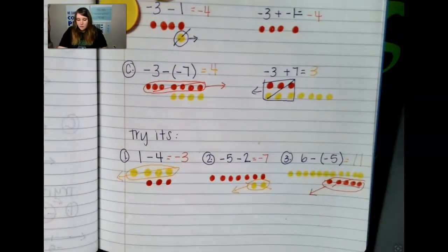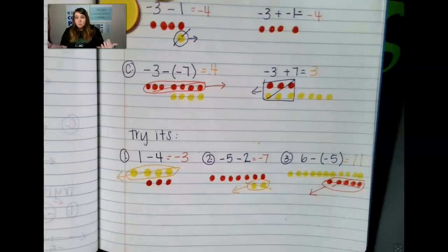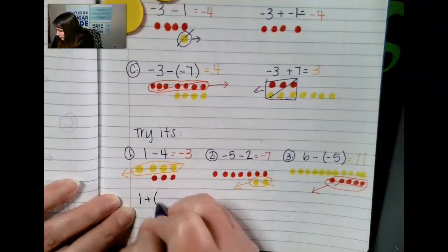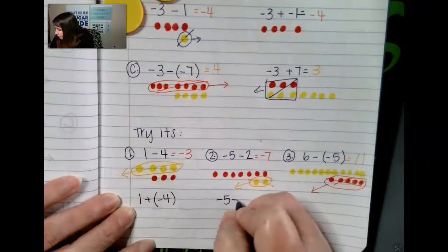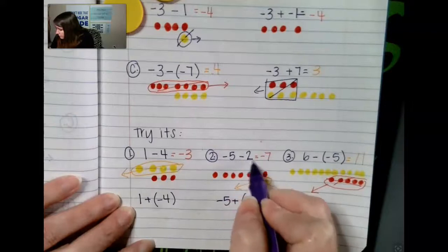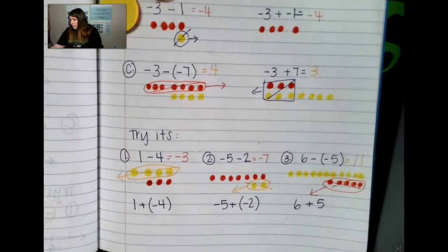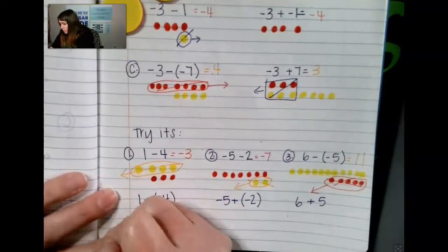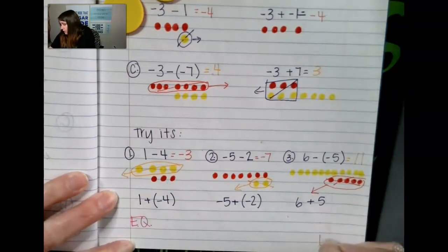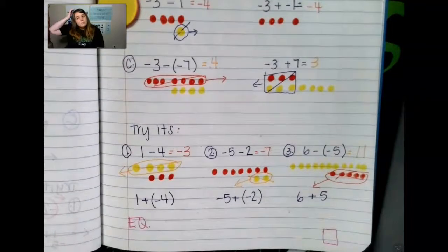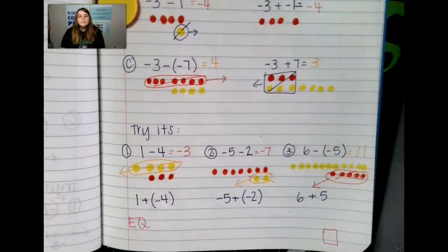How did you do on this? Are you able to model it, solve it, show how to create the possibility so that you can remove something? You can't remove it if it's not there. How would I rewrite these as addition? This one I would rewrite as 1 plus a negative 4. This one I would rewrite as negative 5 plus a negative 2, keeping the symbol with the integer. And this one I would rewrite as 6 plus 5. Now it's your turn to answer your essential question: how do we subtract integers? If you have any questions, please come back to the Google Meet and ask for help or email me. Thank you so much for all your hard work — make it a great day, the Cougar way.